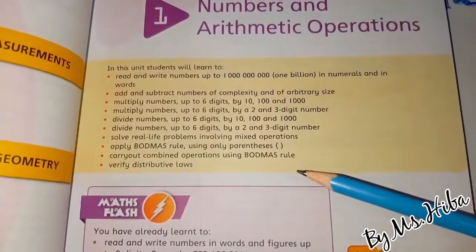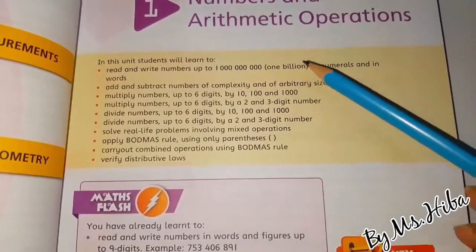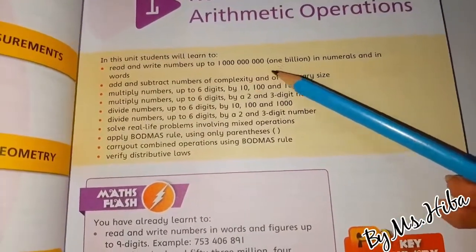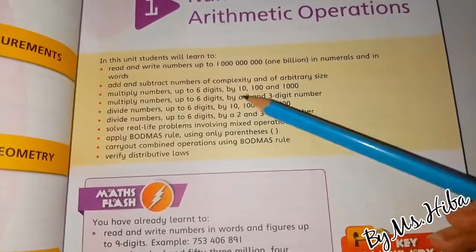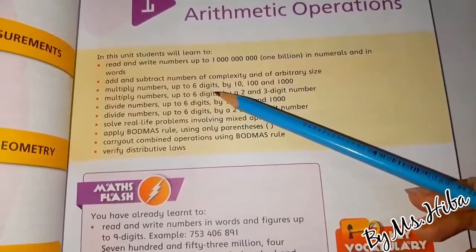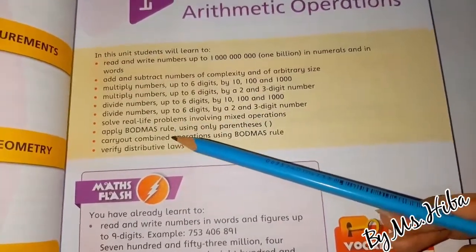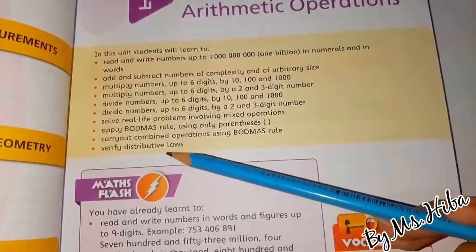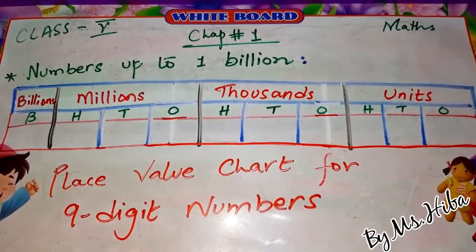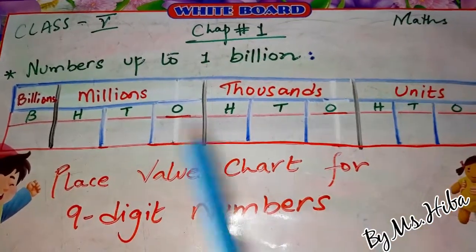In this topic we will learn place value up to one million, addition, subtraction, and multiplication up to six-digit numbers, division up to six-digit numbers, BODMAS rule, and the distributive law. The first thing we need to study in this chapter is numbers up to one million.